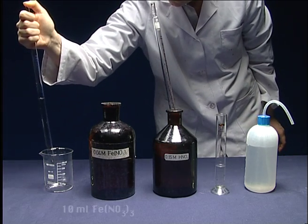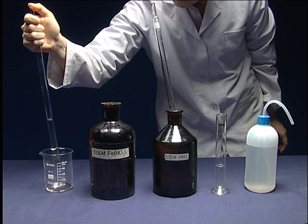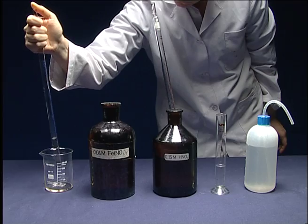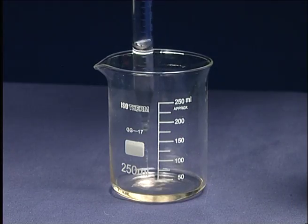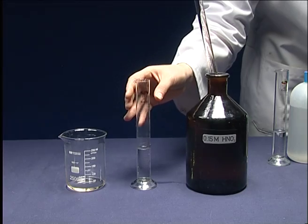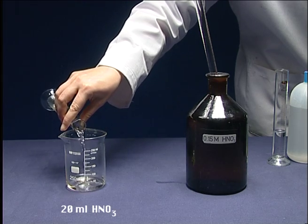Put 10 milliliters of ferric nitrate into a 250 milliliters beaker and add 20 milliliters of nitric acid.